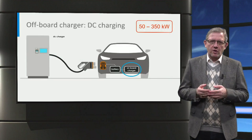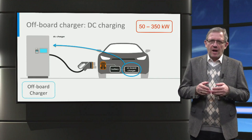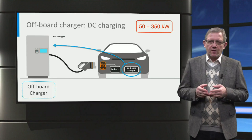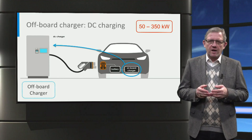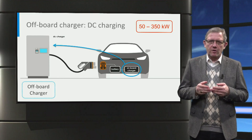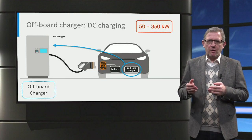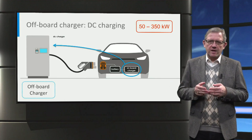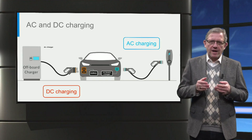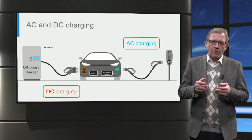Therefore, the solution to increase the charging power is to move the AC-DC converter outside of the vehicle and place it in an off-board charger. This is referred to as DC charging. With no size and weight restrictions, the off-board charger can have a maximum charging power in the order of 50 to 350 kilowatts. In case of DC charging, the off-board charger has an AC to DC power converter and DC power is directly fed to the car via the DC charging vehicle inlet. We hence have both AC and DC charging of electric cars depending on whether the on-board or off-board charger is used.